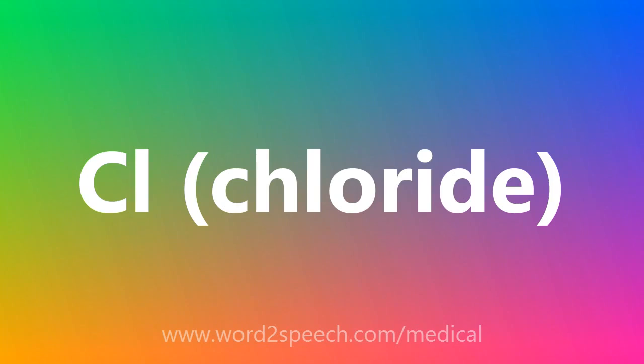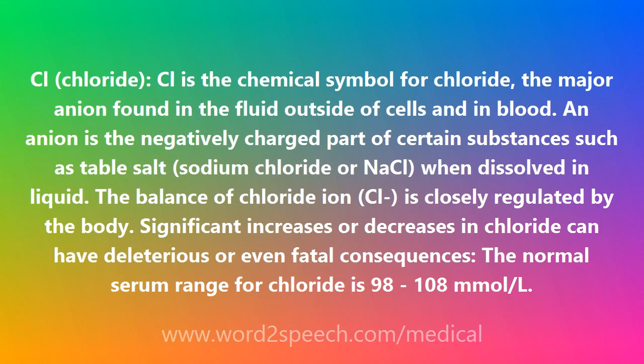Cl is the chemical symbol for chloride, the major anion found in the fluid outside of cells and in blood. An anion is the negatively charged part of certain substances, such as table salt, sodium chloride or NaCl.